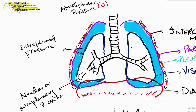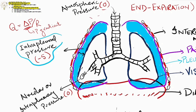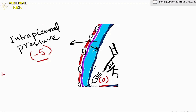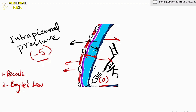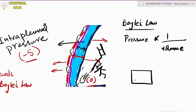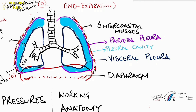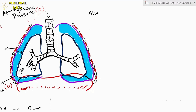Taking atmospheric pressure as reference point zero, the intrapleural pressure at end expiration is approximately minus 5 cmH2O. This negative value exists because of two opposing recoil forces: the outward recoil of the chest wall and the inward recoil of the lung. These opposing forces increase the volume of the pleural cavity. By Boyle's law, pressure is inversely proportional to volume — as volume increases, pressure decreases — which is why intrapleural pressure is subzero, at minus 5.